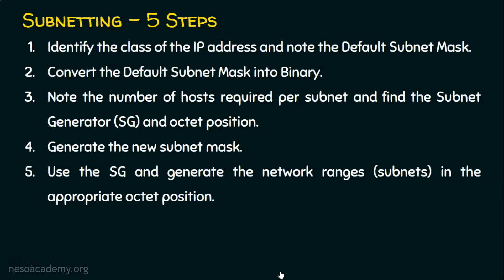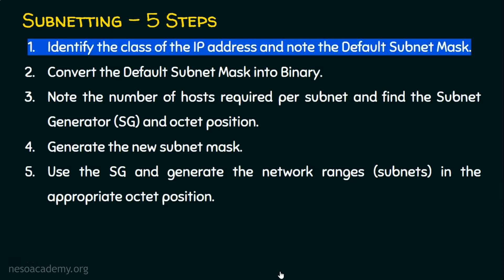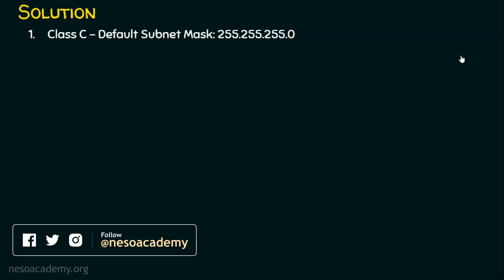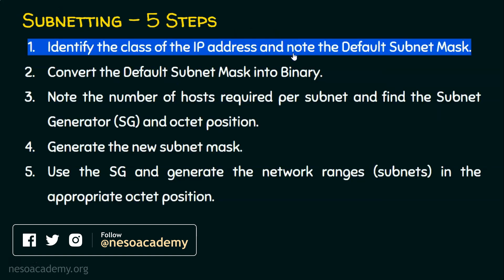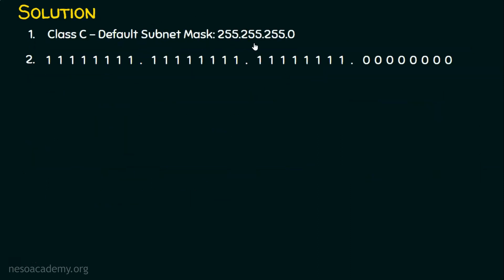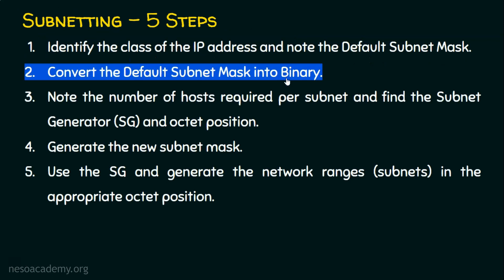Step 1: Identify the class of the IP address and note the default subnet mask. The given address is 192.168.10.0, which is Class C, so the default subnet mask is 255.255.255.0. Step 2: Convert the default subnet mask into binary — we get all ones in the first three octets and all zeros in the fourth octet.